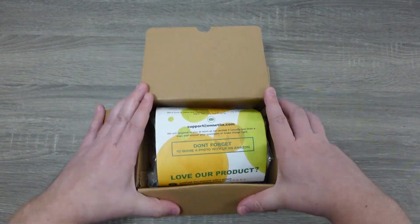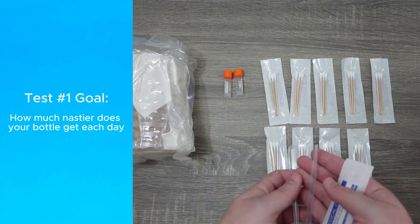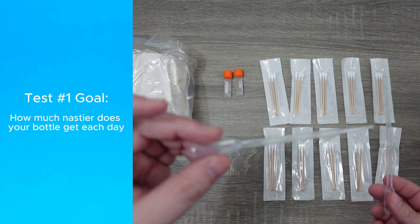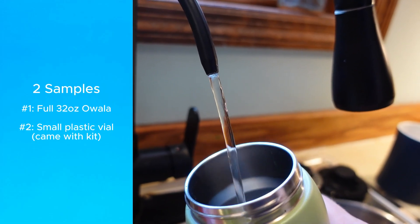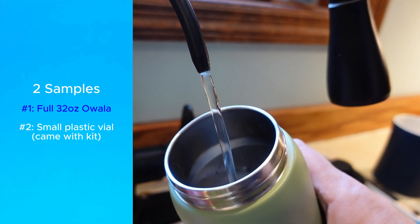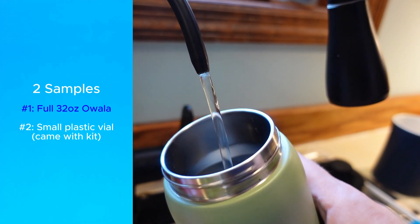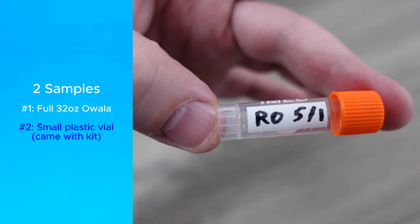So I set up two different tests. The goal of the first test was to see how much bacteria growth occurred with each successive day, mainly around the contact points like the spout and the seals. First, I took two samples of water from our reverse osmosis system, including a full bottle sample in this freshly cleaned 32 ounce Owalla, and a smaller sample in this little plastic vial that came with that bacteria test kit.